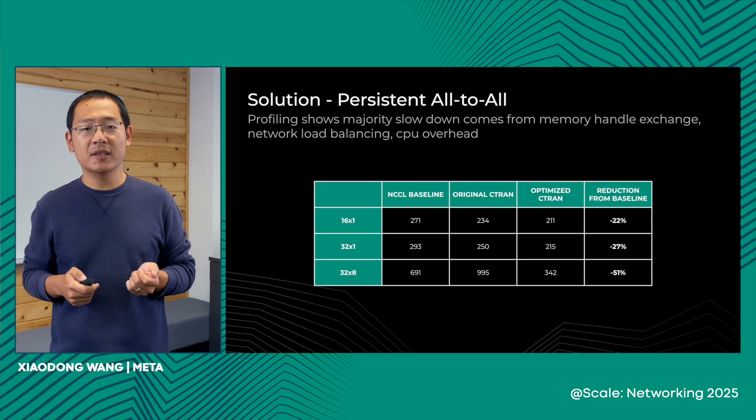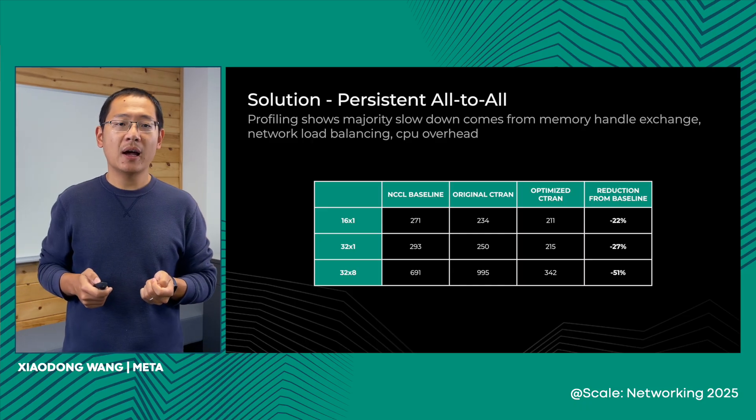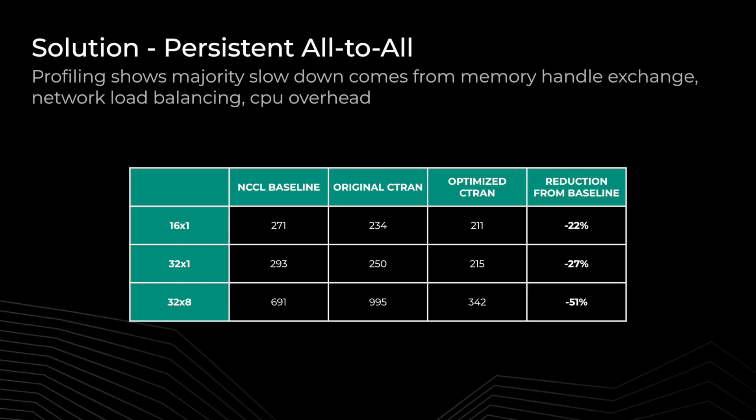Our second optimization is persistent all-to-all. Profiling of our collective kernels shows the majority of slowdown comes from memory handle exchange, network load balancing, and CPU overhead. Persistent all-to-all eliminates these CPU overheads. Compared to the NCCL baseline, our custom transport — called C-Trend, which will be open-sourced very soon — brings 22% to 51% improvement across various sizes compared to the NCCL baseline.